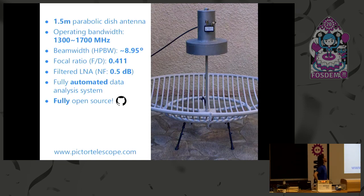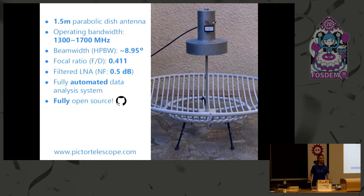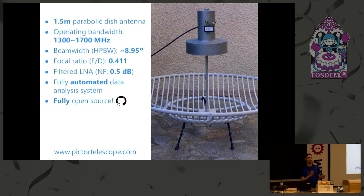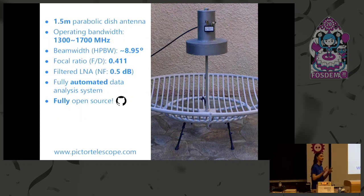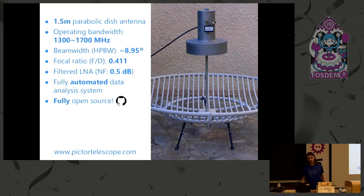Let's look at some stats. It's a parabolic antenna with a diameter of 1.5 meters, so it's a large dish. It can operate from 1,300 to 1,700 megahertz, so if anyone doesn't want to observe the hydrogen line, they can look at a different frequency. The half-power beam width — this is like the field of view — it's about nine degrees. And most importantly, it's got a filtered LNA, a very low noise amplifier with a 0.5 dB noise figure.